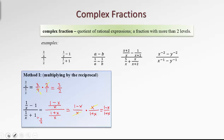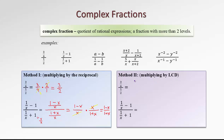The same problems could be simplified using the LCD method. We look at the lowest common denominator of all the small denominators — in this case, four and two, which is four. We multiply the big numerator and the big denominator by this LCD, which is four. In the numerator, the four cancels completely, leaving us with just three. In the denominator, we reduce four with two, leaving us with two. So the denominator is two, and we end up with the same answer as before: three halves.